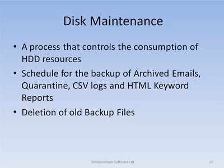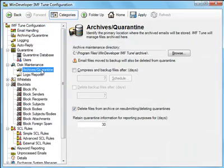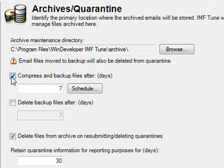We now turn to disk maintenance, the last feature we will be demonstrating today. In simple terms, this is a process that manages disk space consumption. It provides two sets of settings: one for archived and quarantined emails and another for logging. The process takes care to automatically compress, backup and subsequently delete archived emails and logs reaching the configured age limit. For example, we can choose to retain quarantine email for 60 days, and the system will then take care to purge older quarantines keeping consumption under check. Here, 'compress and backup files after' determines the number of days emails must stage before being transferred to backup. 'Delete backup files after' determines the number of days a backup must stage before deletion.